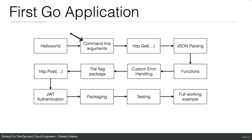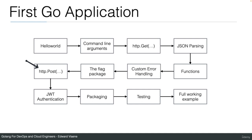I'm first going to cover command line arguments, and then we are going to make API calls. API calls from a Golang program are often used — that's why I picked this as the first example. We're going to do JSON parsing because our test server will reply with JSON. I'm going to explain functions, custom error handling, the flag package, and POST requests. I will also explain JWT authentication and how you implement that in Go. Then we're going to package our code, test our code, and have a full working example — our first Go application.